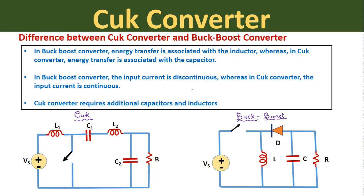Now the difference between the Cuk Converter and the Buck-Boost Converter. First, in the buck-boost converter, energy transfer is associated with the inductor between input and output, whereas in the Cuk Converter energy transfer is associated with capacitor C1 between input and output. Second, in the buck-boost converter the input current is discontinuous, whereas in the Cuk Converter both input and output currents are continuous — this is the main advantage of the Cuk Converter. Third, the Cuk Converter uses more components: two inductors and two capacitors, compared to the buck-boost converter which uses only one inductor and one capacitor.